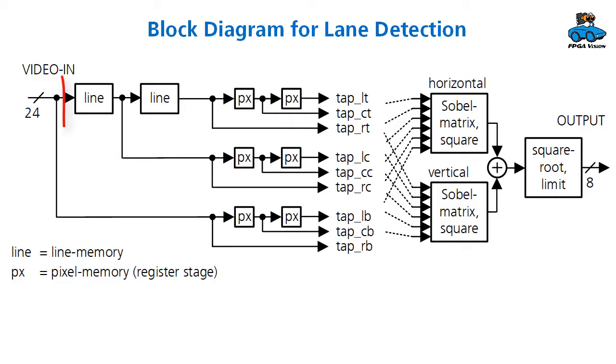As a result, we now have the architecture for our circuit design. Here we have line memory and pixel memory to generate the 3x3 matrix. This is the top left, center top, right top, and here left bottom, center bottom, right bottom. So, the names indicate the position.